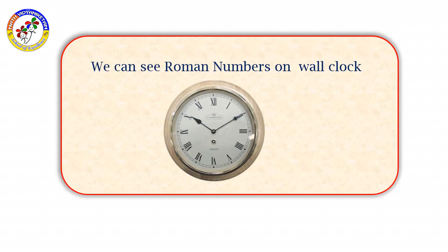So, we can see Roman numbers on a wall clock. Just look at this. So, here are the Roman symbols. The values are 1, 2, 3, 4, 5, 6, 7, 8, 9, 10, 11, 12. Is it clear?